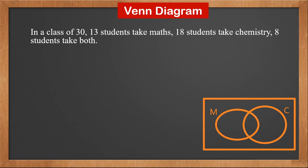M means math. C means chemistry. We know 8 take both. So we mark 8 in the common area of M and C. Students taking only math is 13 minus 8, which is 5.